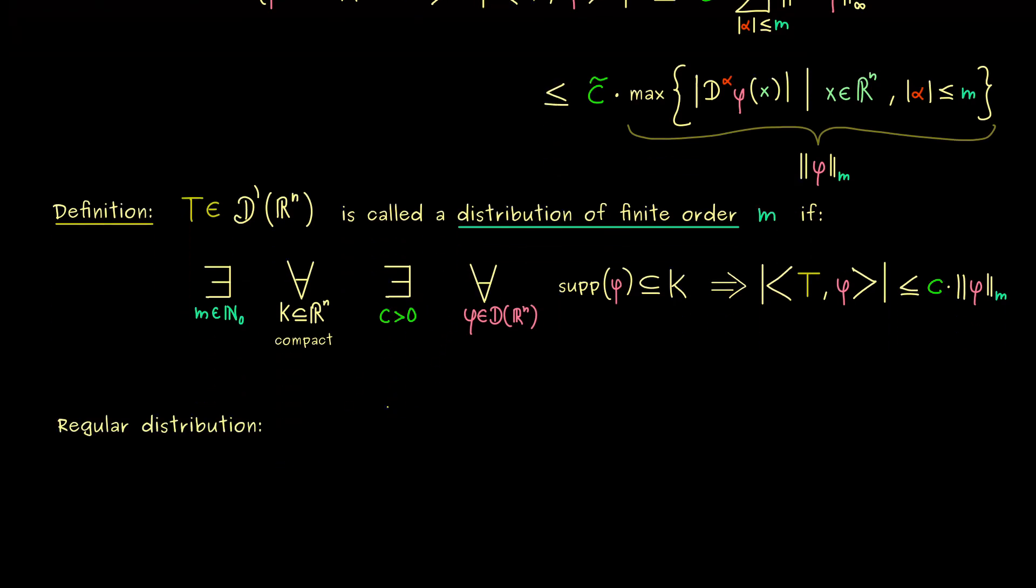And in fact, we already know some of them, for example the regular distributions. These are given by a locally integrable function f. Therefore, this duality pairing with a test function φ can be rewritten as an integral. And if we take a test function inside the compact domain K, we can just integrate over K. And then we just have f(x) times φ(x). And now you see we just take the absolute value and then we have a nice estimate for that.